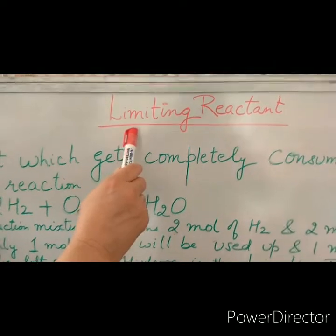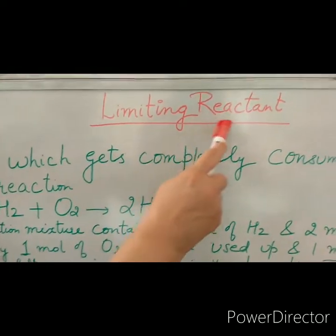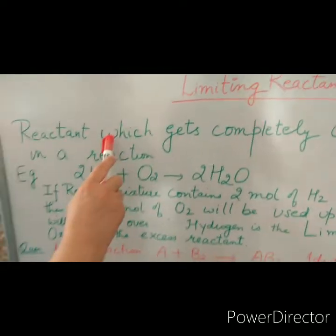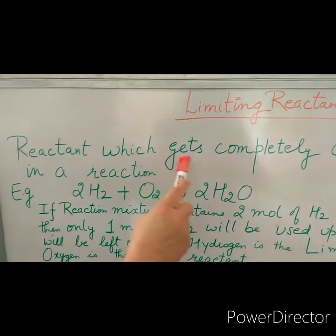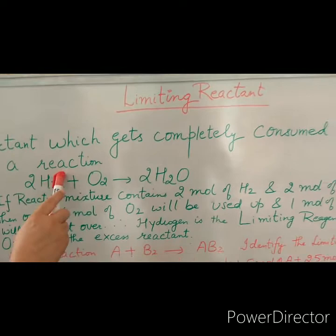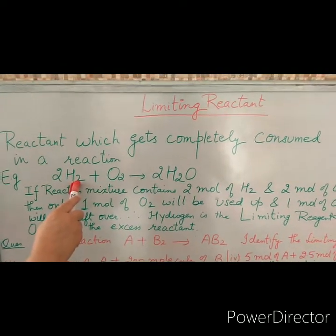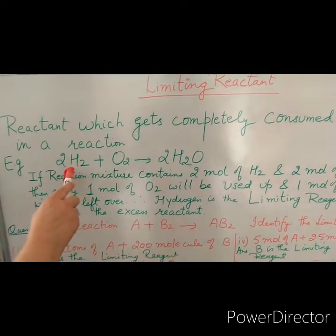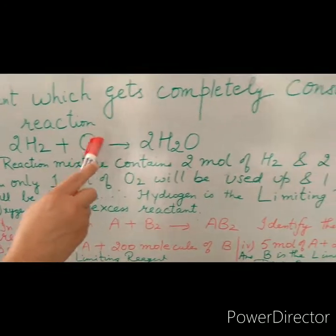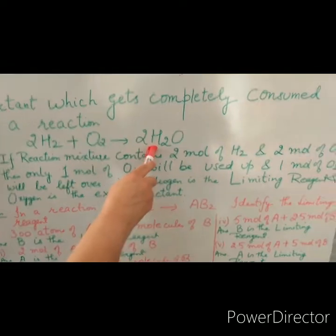Let's discuss the last topic of the unit: limiting reactant. A limiting reactant is a reactant which gets completely consumed in a reaction. For example, let us understand this balanced chemical equation where we have 2 mol of hydrogen and 1 mol of oxygen, and they unite to give 2 mol of water.